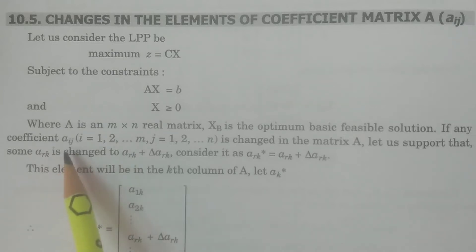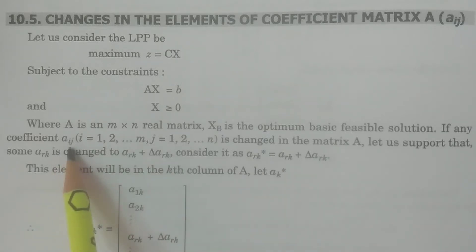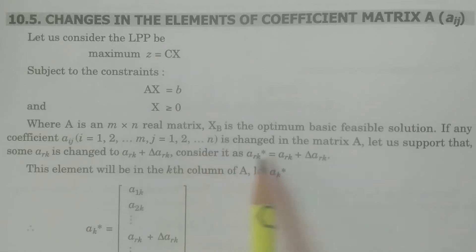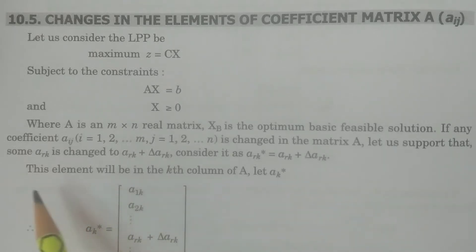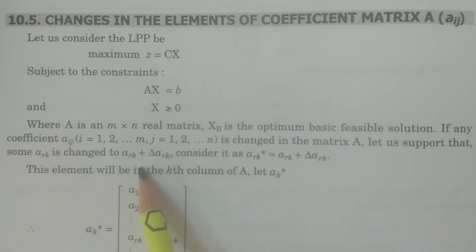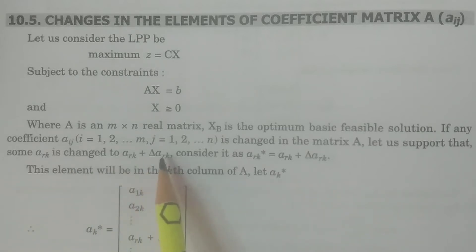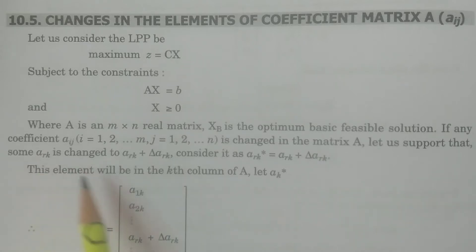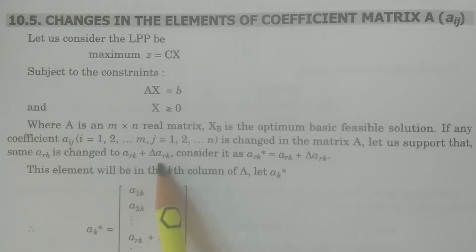Any coefficient aij, where i equals 1 to m and j equals 1 to n, is changed in matrix A. Consider that the coefficient ark is changed — i equals 1 to m, j equals 1 to n. We consider the change as: for some ark, it is changed to ark plus delta-ark. So the old value is ark, and the new changed value is ark plus delta-ark; the change is delta-ark.